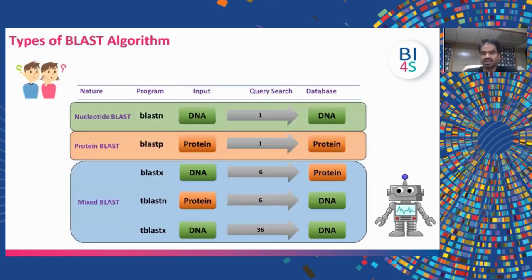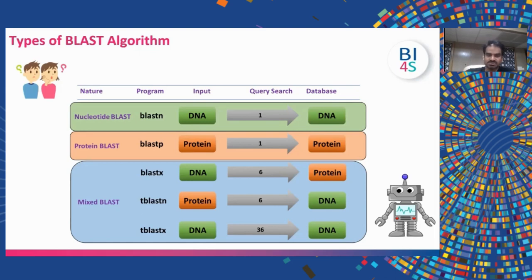Now the types of BLAST algorithms available. BLASTN is the one we use most often — it is nucleotide BLAST where we cross compare nucleotide sequences against nucleotide databases, so DNA against DNA search. BLASTP is protein BLAST, where we search protein input sequences against protein databases — protein versus protein search. Then we have BLASTX, a mixed search where the input sequence is DNA but we search for similarities in protein databases.